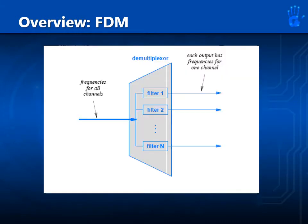On the receiver side for FDM, we have a single path in which all the frequencies for all channels are present. It will then pass through a demultiplexor, which consists of various filters. Every filter will let the corresponding frequencies pass through. For example, filter 1 will allow the frequencies from sender 1 to pass through to receiver 1. Filter 2 will allow only messages from sender 2 to pass through to receiver 2, and so on.